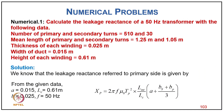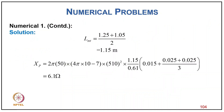Numerical problem 1: Find the leakage reactance of a transformer with: primary/secondary turns 510/30, mean turn length of primary/secondary 1.25 m, thickness of each winding 0.025 m, width of duct 0.015 m, height of each winding 0.61 m. Using Xp = 2πf×μ₀×Tp²×LMT/Lc × [a + bp/3], with LMT = (1.25+1.05)/2 = 1.15 m, the result is Xp = 6.1 Ω.